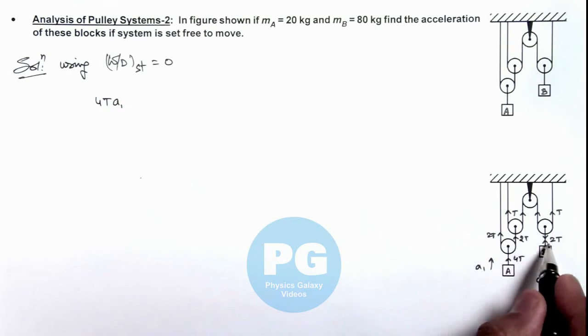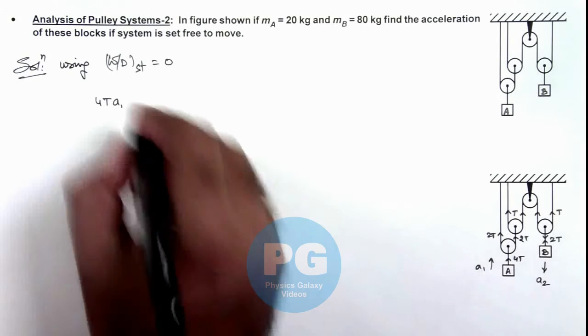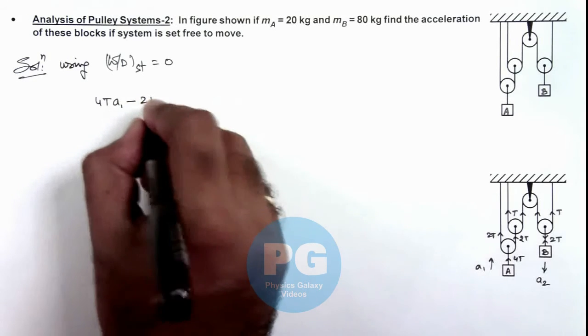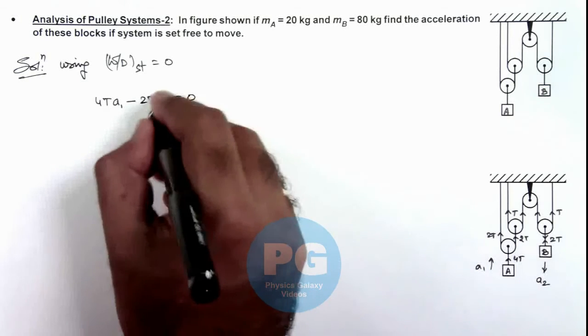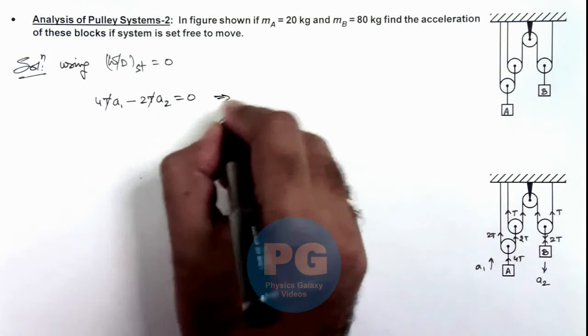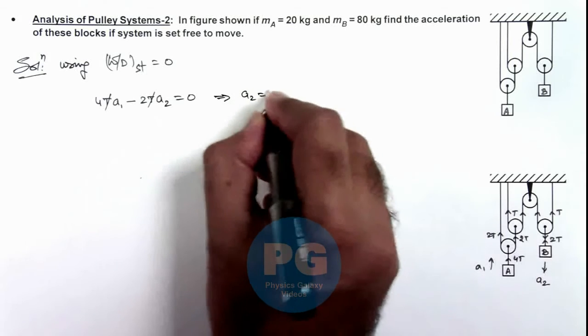And the work done by this string on block B, as it is acting opposite to its displacement, we can write it minus 2T a₂. That should be equal to zero. And on simplifying I am getting the value a₂ is equal to 2 a₁.